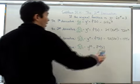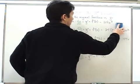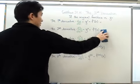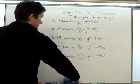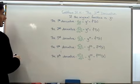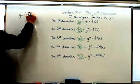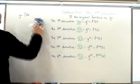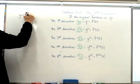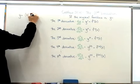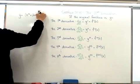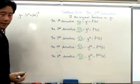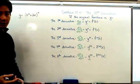Let's take a look at a more complicated example to make sure that everyone is alright with this process. So if we have y being equal to x to the 3rd plus 2x raised to the 4th power. Notice that we're going to have to use the chain rule because we have a composite function here.